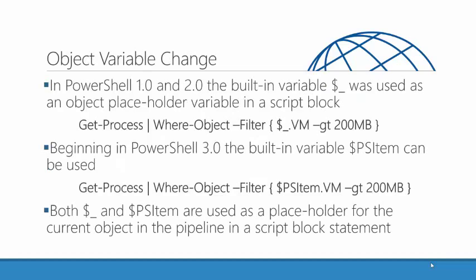One other thing to take a look at before we do examples: when we use the -Filter parameter or the traditional syntax, inside of that script block you have the dollar underscore. That dollar underscore is what we call a placeholder variable. It essentially holds each object as it comes through the pipeline — kind of stops it in place so we can examine a property. In this case, we're looking at the VM or virtual memory property. Visualize each process flowing through the pipeline: each process one at a time gets placed in that dollar underscore variable so we can look at its properties.